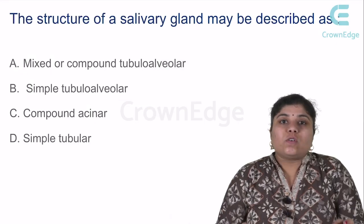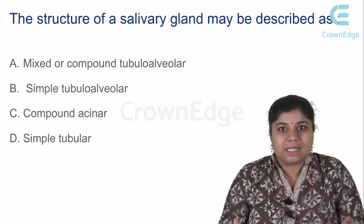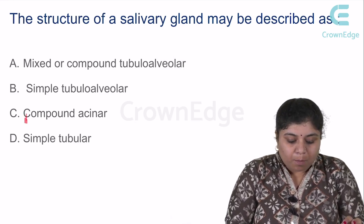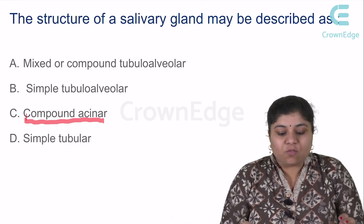Getting back to salivary glands — salivary glands produce their secretion into the oral cavity, making them exocrine glands. They have a branched ductal system, making them compound glands, with acinar secretory units and sometimes tubuloacinar structures as in mixed salivary glands. So we call it a compound tubuloacinar gland. In the question given, the nearest answer would be compound acinar — that is the answer.